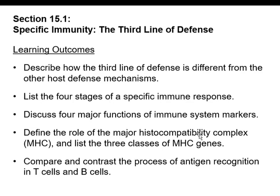Here are some of the learning outcomes for this chapter: describe the third line of defense and how it differs from other host defenses; list the four stages of the specific immune response; identify the four major functions of immune system markers; define the role of the major histocompatibility complex and the three classes of MHC genes; and compare and contrast antigen recognition in B cells and T cells.